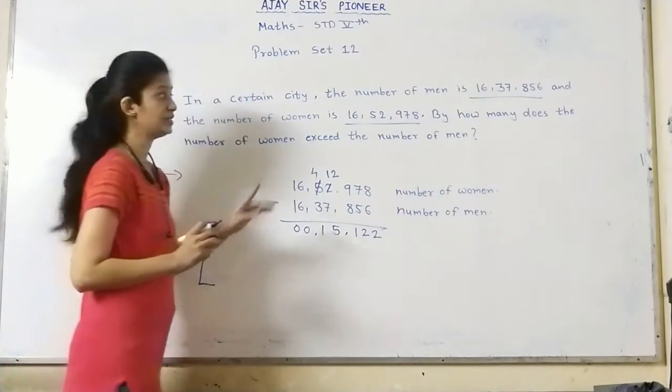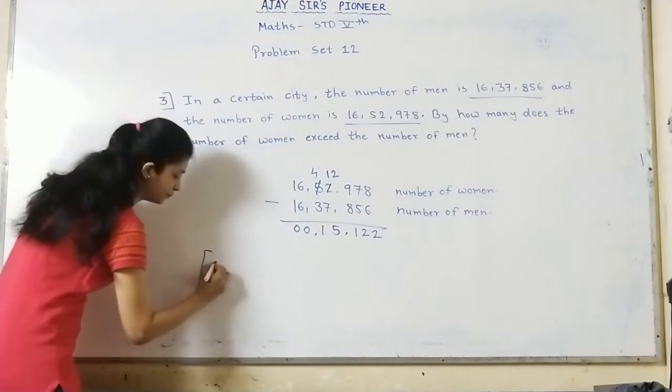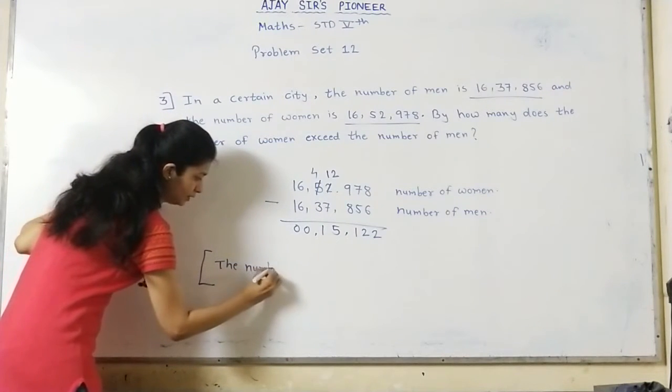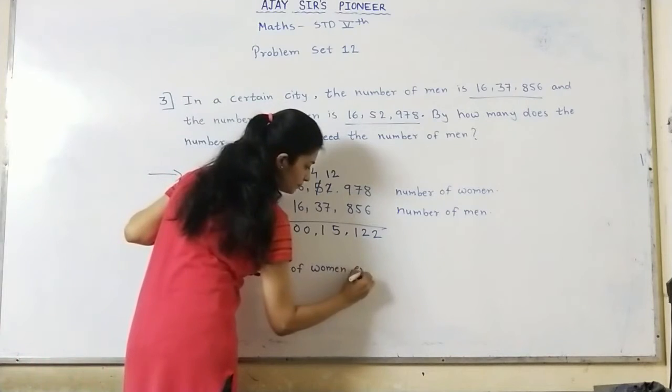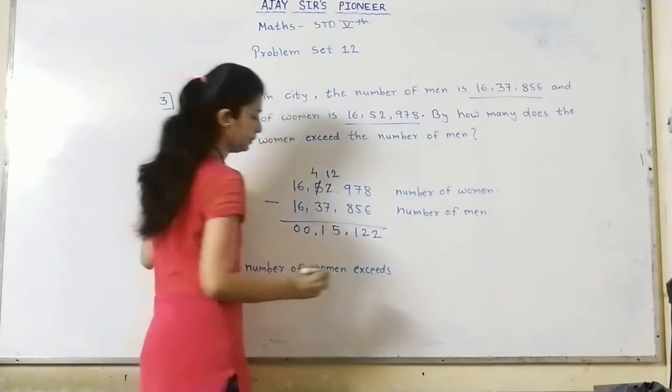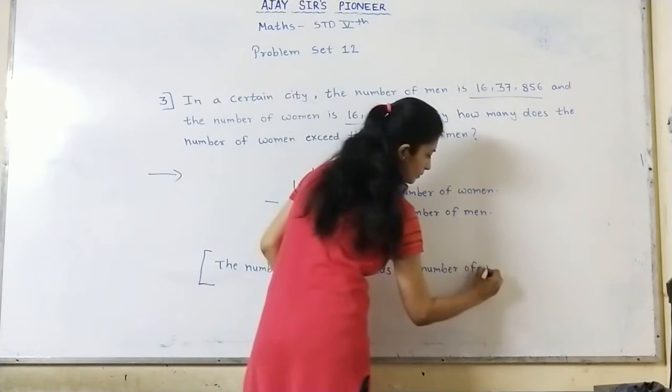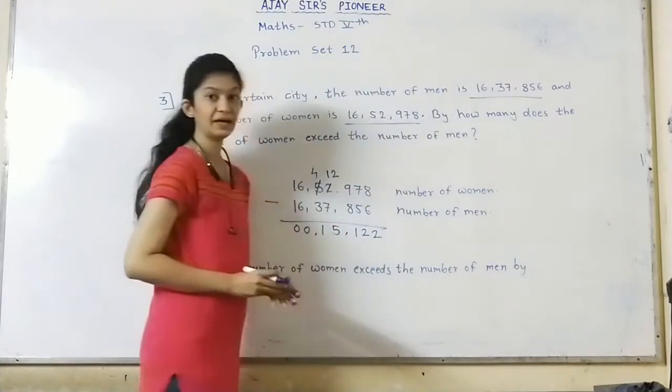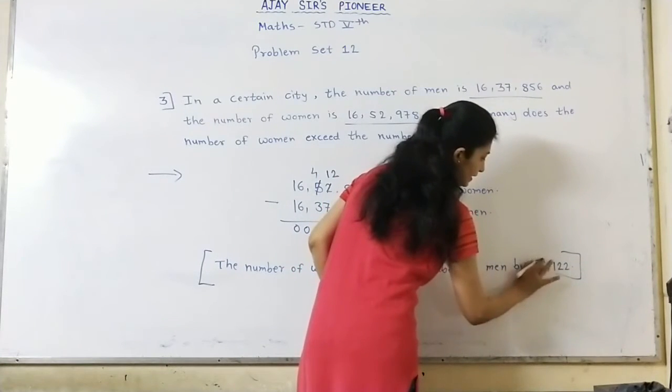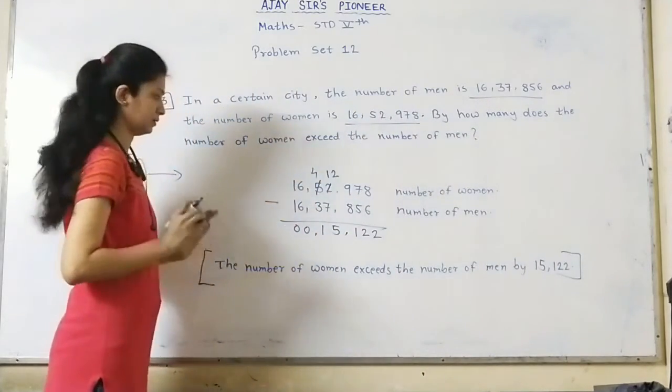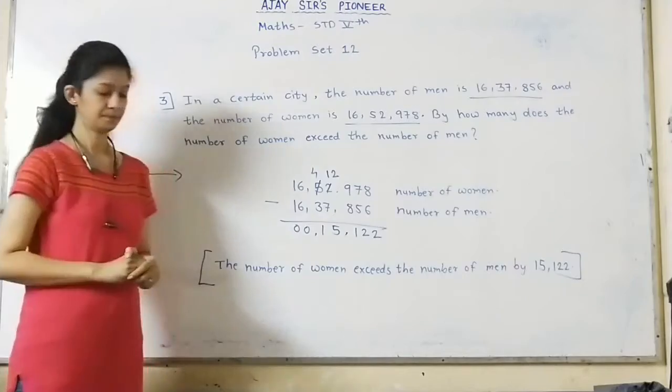What is the main question? By how much does the number of women exceed the number of men? So the number of women exceeds the number of men by 15,122. Full stop and bracket complete. Hope you understood. You need to write this down in your tuition book.